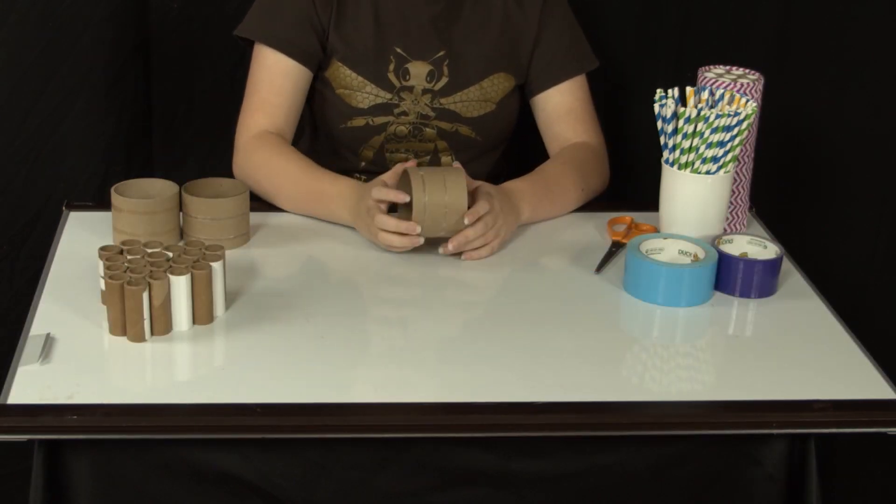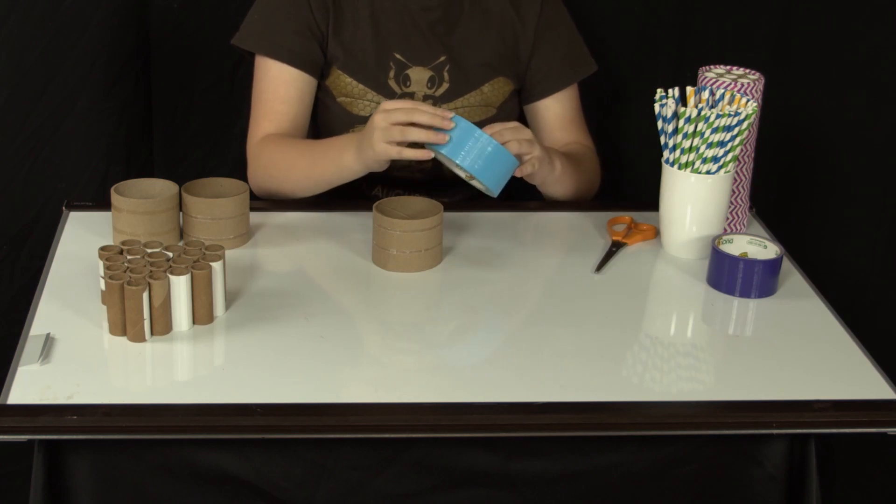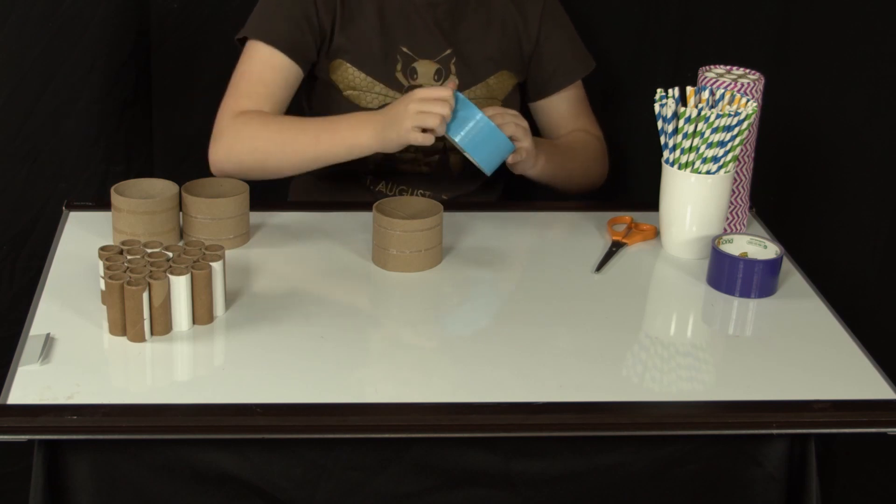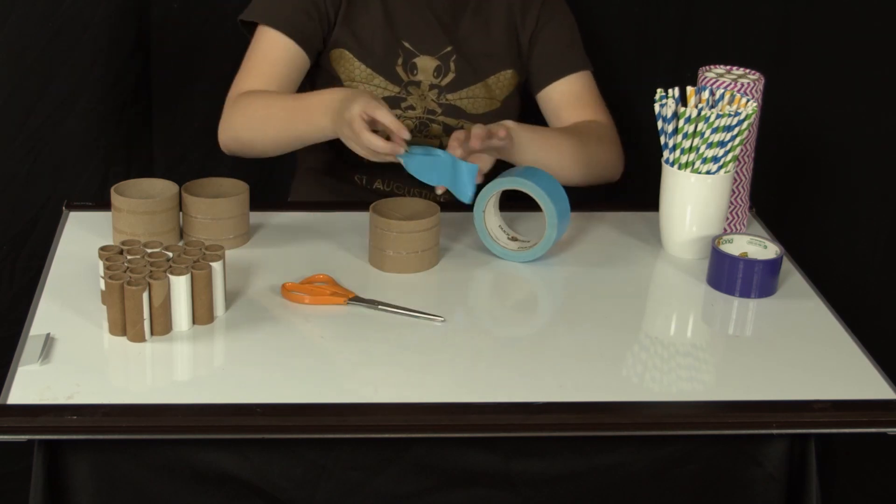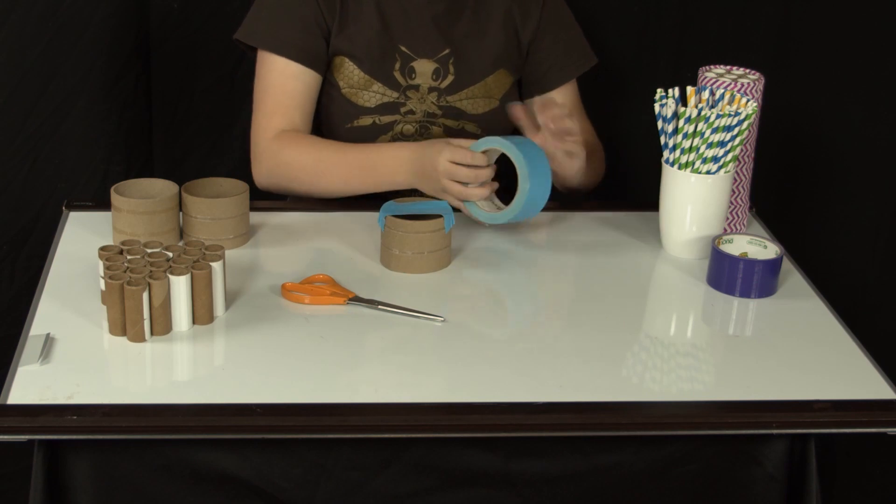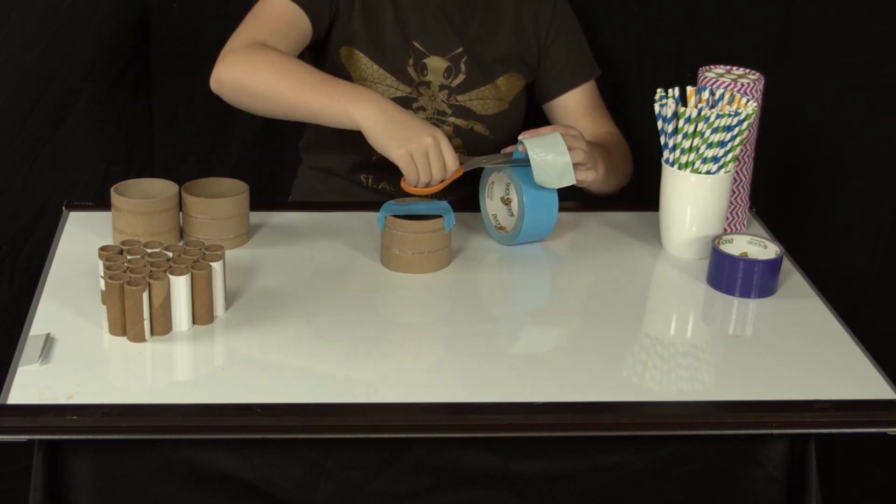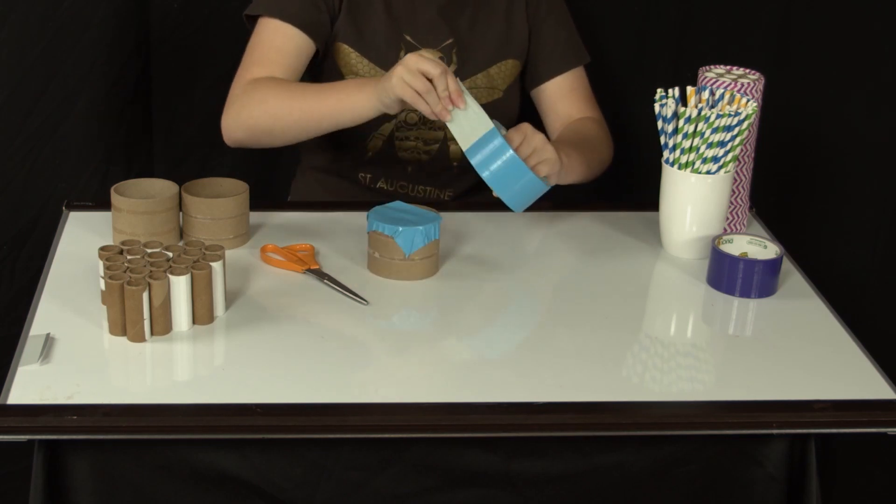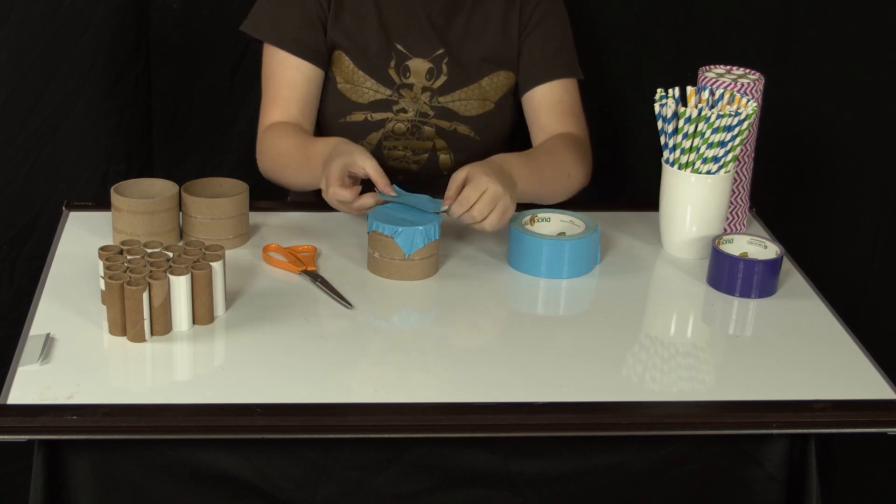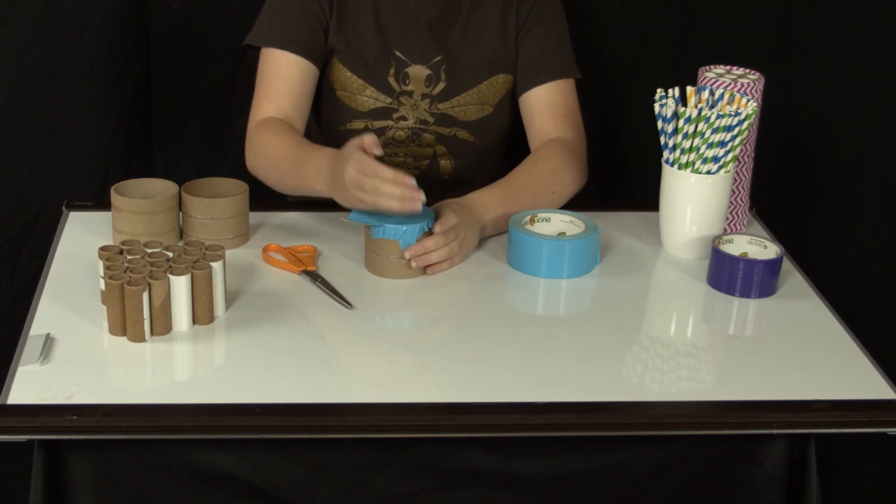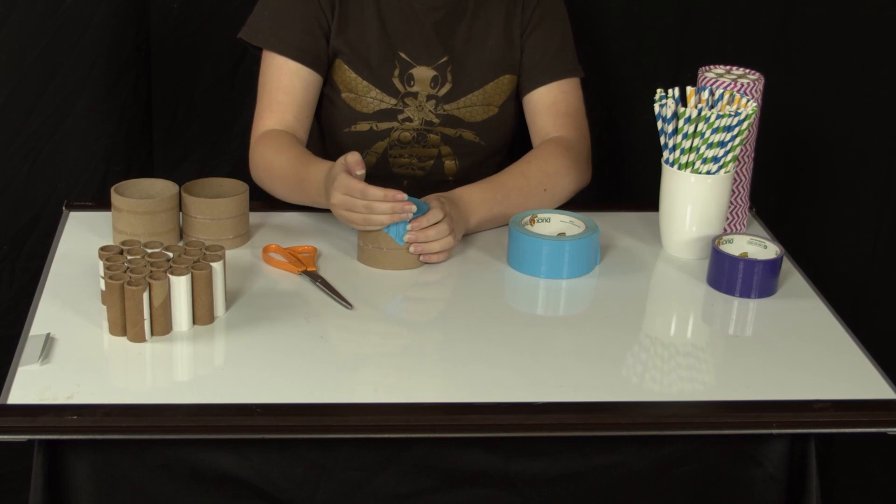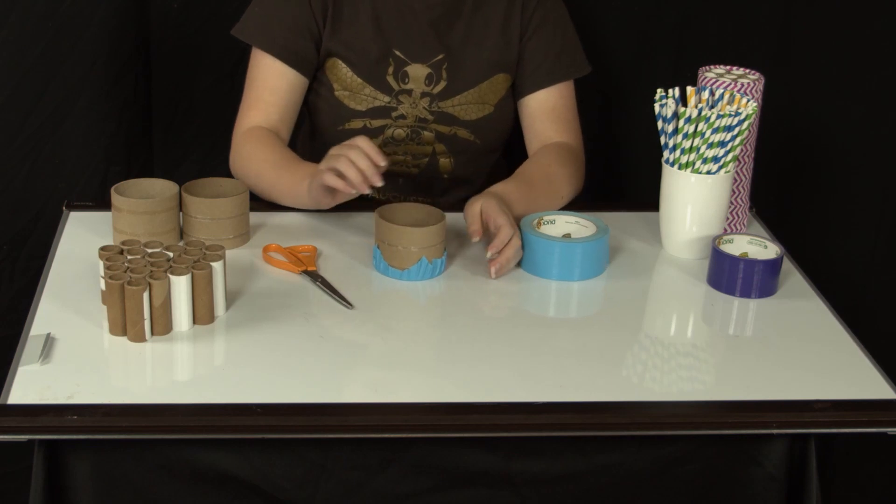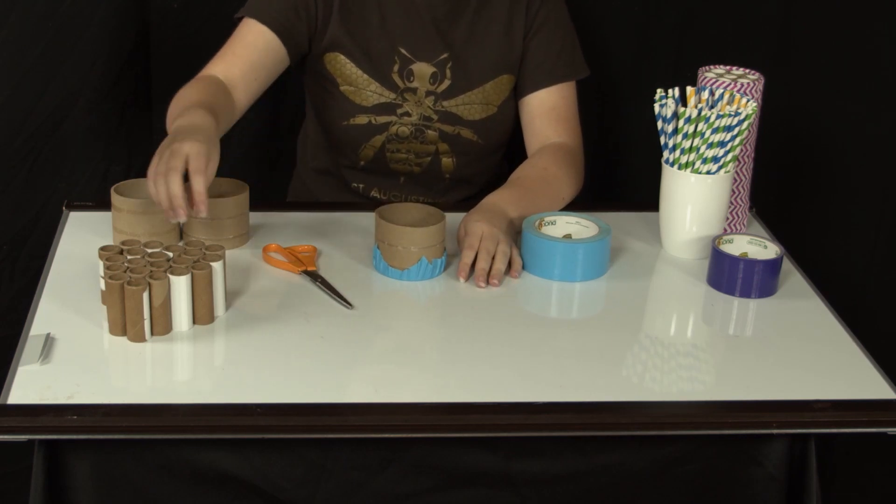To assemble the habitat, take one large roll and cover one side with tape. This will act as the back of our bee box. Next, put in seven small rolls so they fit inside firmly.